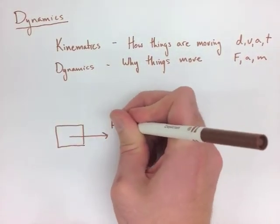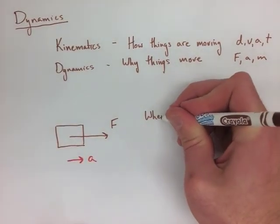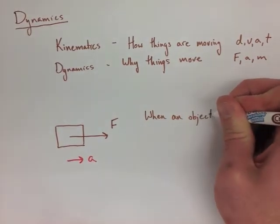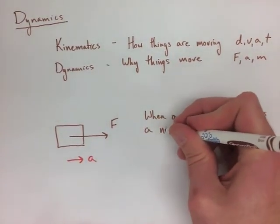If we have an object, and it's got some force being applied to it in one direction, what that means is it's going to accelerate in that direction. Nothing's opposing it. Now in this diagram, we only have one force showing.